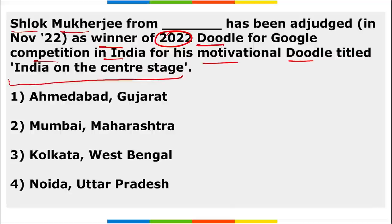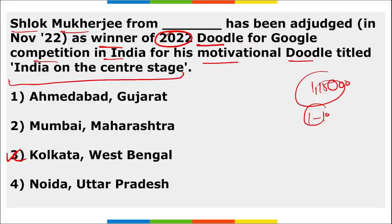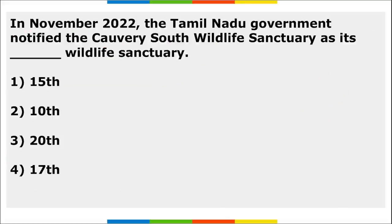Shlok Mukharji is the winner of the 2022 Doodle for Google competition in India for his motivational doodle titled 'India on the Centre Stage.' He is from Kolkata, West Bengal. This year's contest received around 1,15,000 entries from over 100 cities across India from students of classes 1 to 10. Tamil Nadu's Cauvery South Wildlife Sanctuary was notified as the 17th wildlife sanctuary of Tamil Nadu state.